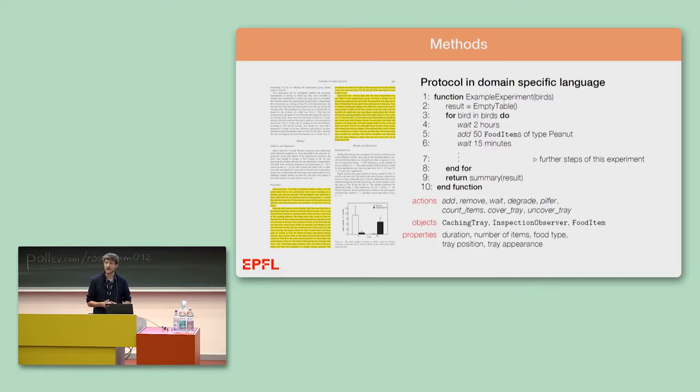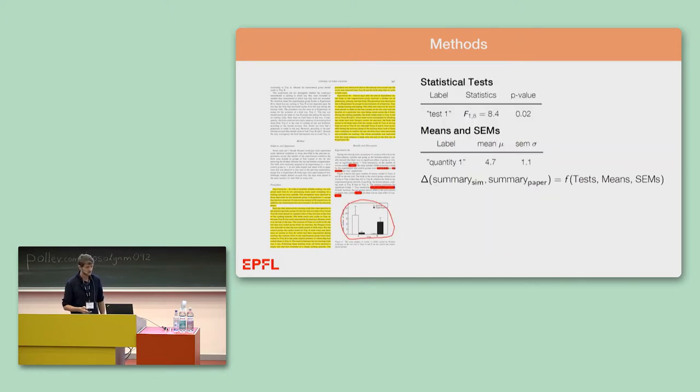This domain-specific language needed only a very limited vocabulary. There are a few actions, only three types of objects, and a handful of properties, and this is all that was needed to formalize all the 28 experiments that I focus on today. The summary consists of the statistical tests, the means and the standard errors of the mean, everything that I could extract from the respective publications, from the text and the figures.